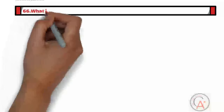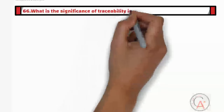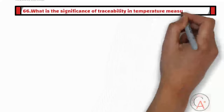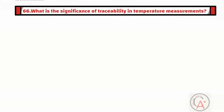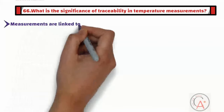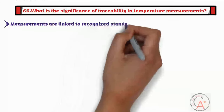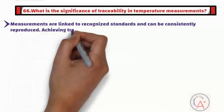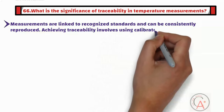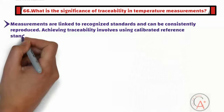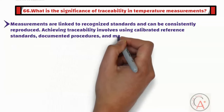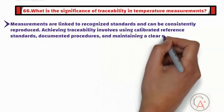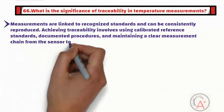Question sixty-six is: what is the significance of traceability in temperature measurements and how is it achieved? Traceability ensures that measurements are linked to recognized standards and can be consistently reproduced. Achieving traceability involves using calibrated reference standards, documented procedures, and maintaining a clear measurement chain from the sensor to the standard reference.